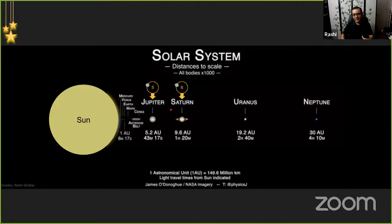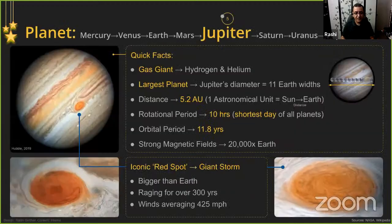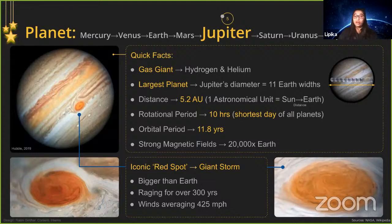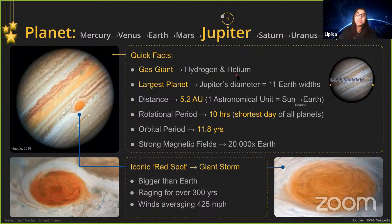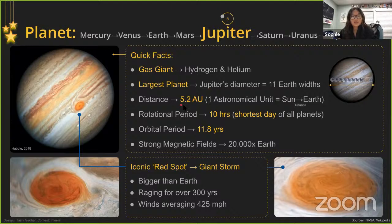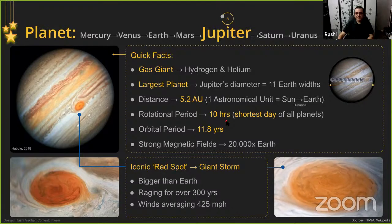Jupiter and Saturn are massive gas giants. Chelsea, Lipika, and Sophie will talk about them. Jupiter is the King Kong planet of our solar system — more than twice as massive as all the other planets combined. Being a gas giant, its atmosphere is composed primarily of hydrogen and helium. The fifth planet, Jupiter is located 5.2 astronomical units from Earth. Its rotational period is the shortest of all planets at just 10 hours — the same time it takes to fly from California to Japan. Its orbital period is almost 12 years. Jupiter also has an incredibly strong magnetic field — even standing 3 million kilometers away, which is a fiftieth of an astronomical unit, you would still feel its effects.